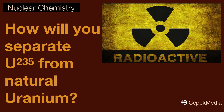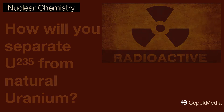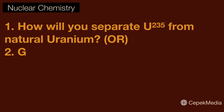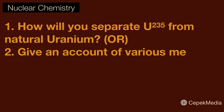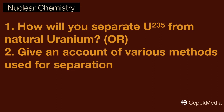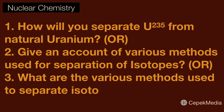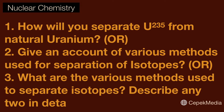How will you separate uranium-235 from natural uranium? This question can also be asked as: give an account of various methods used for separation of isotopes, or what are the various methods used to separate isotopes? Describe any two in detail.